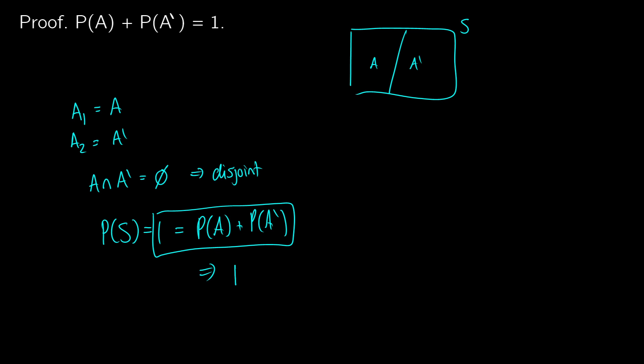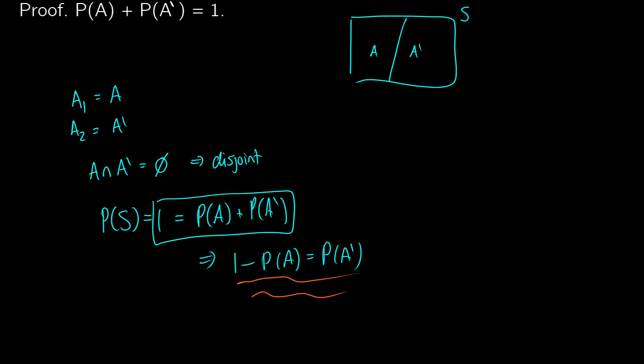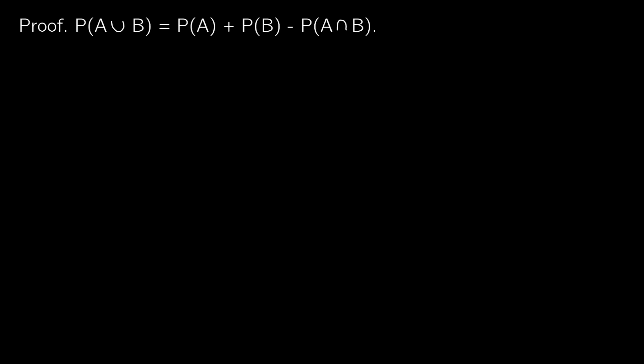This is usually more useful in the form: one minus the probability of event A equals the probability that A-bar occurs. This formula tends to be more useful in application. We can also prove one more thing — that the probability of the union of A and B equals the probability of A plus the probability of B minus the probability of A intersection B.